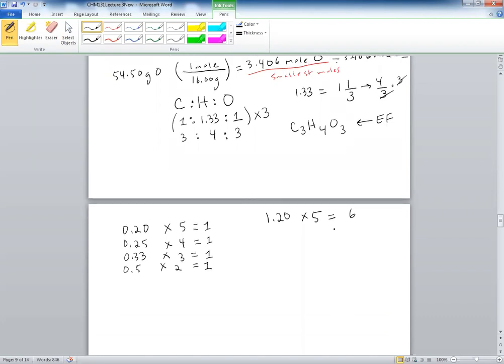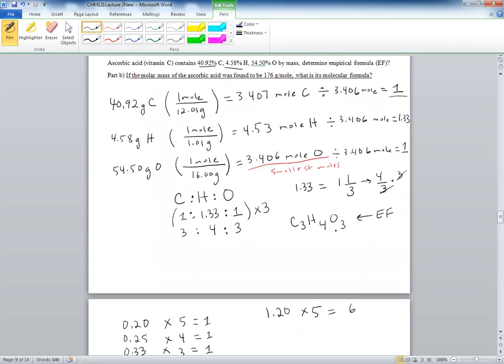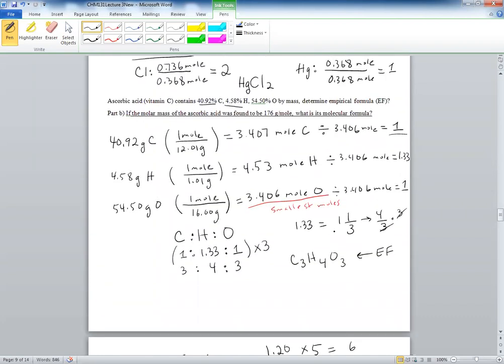So very well, how do we now determine the molecular formula? It says part B, if the molar mass of ascorbic acid was found to be 176 grams per mole, what is its molecular formula?